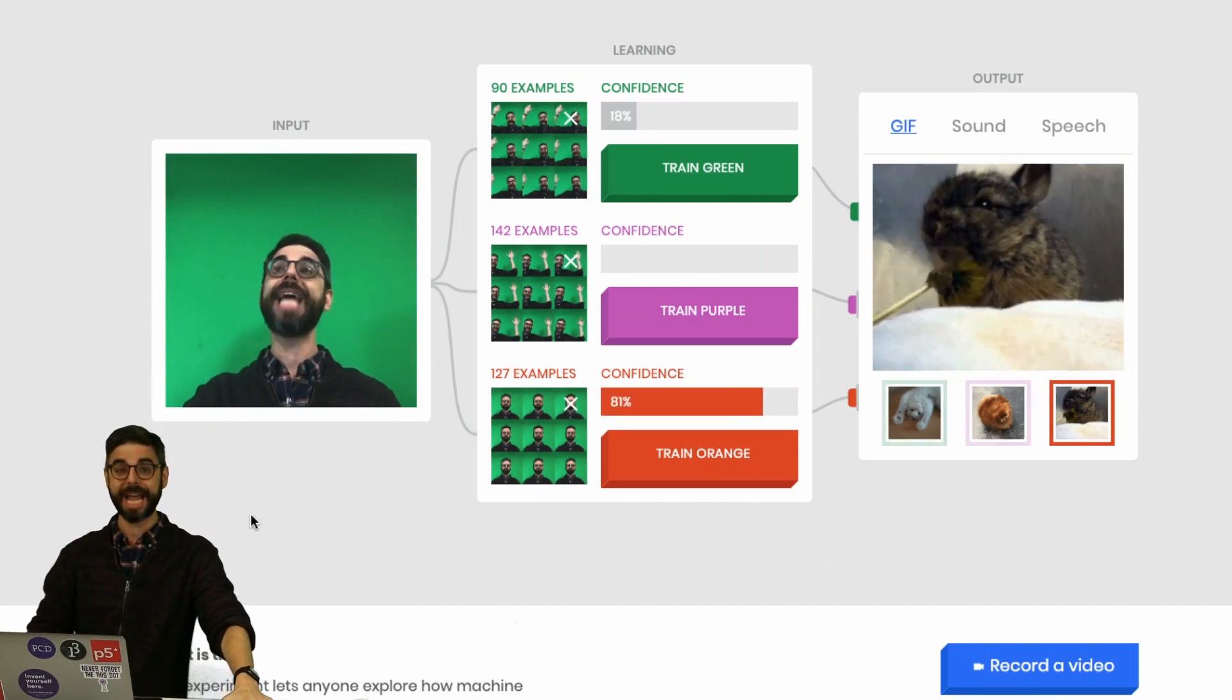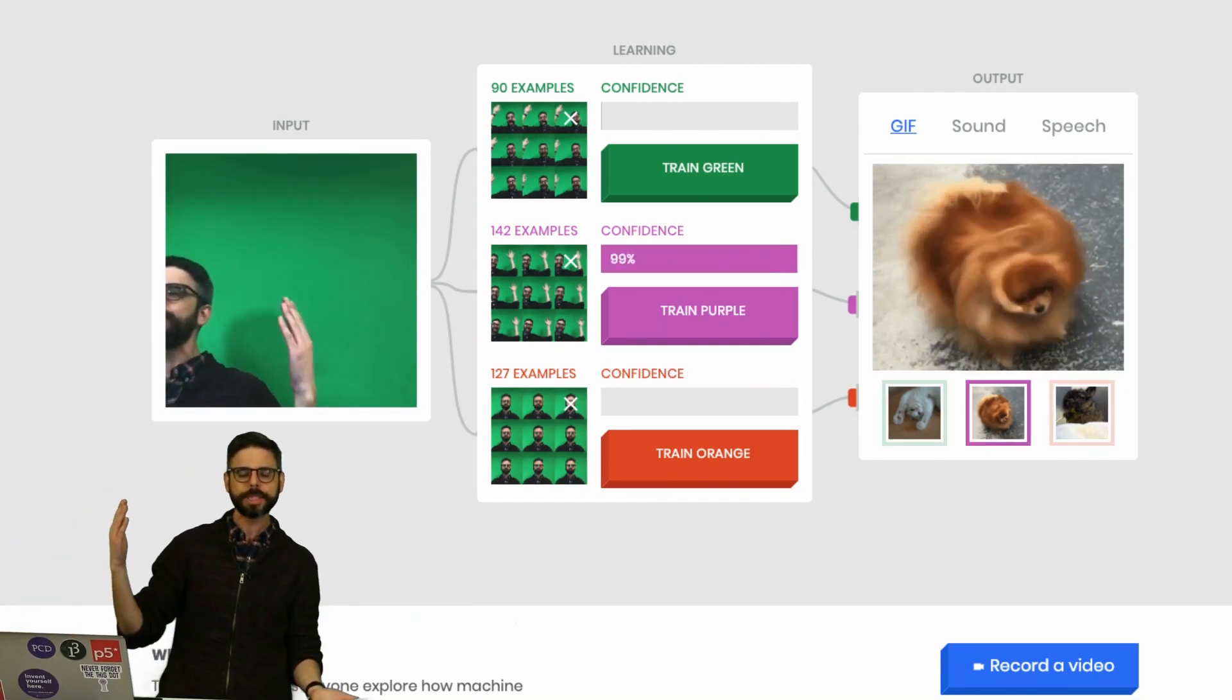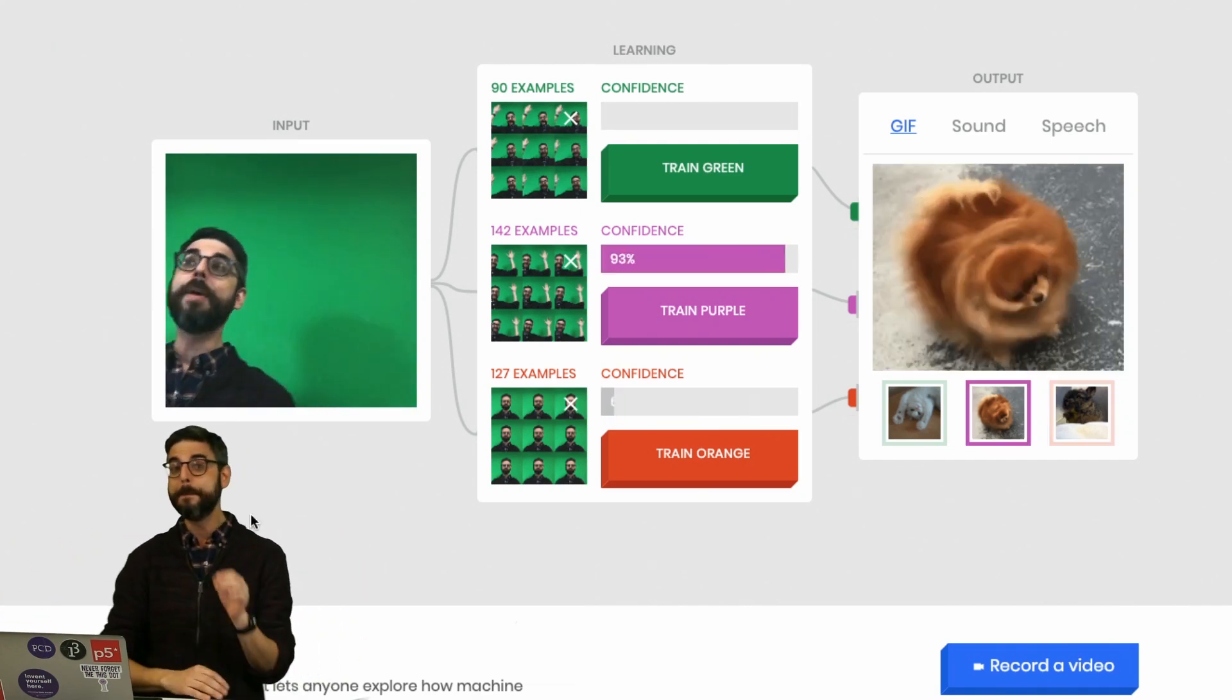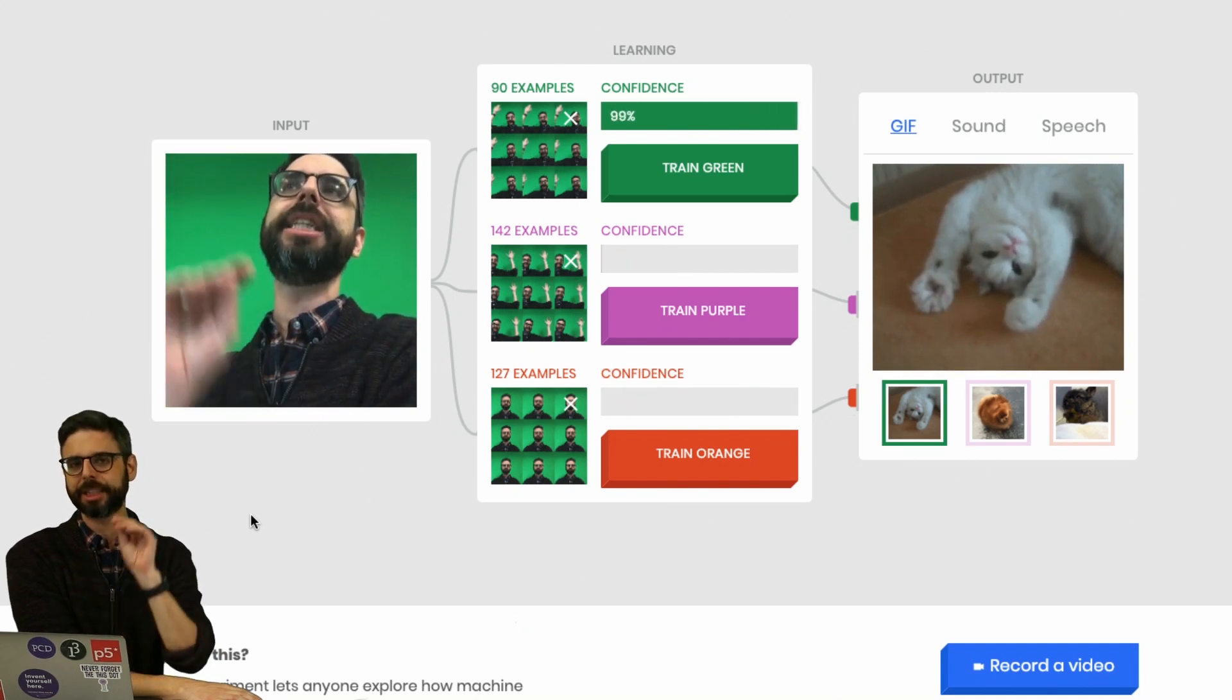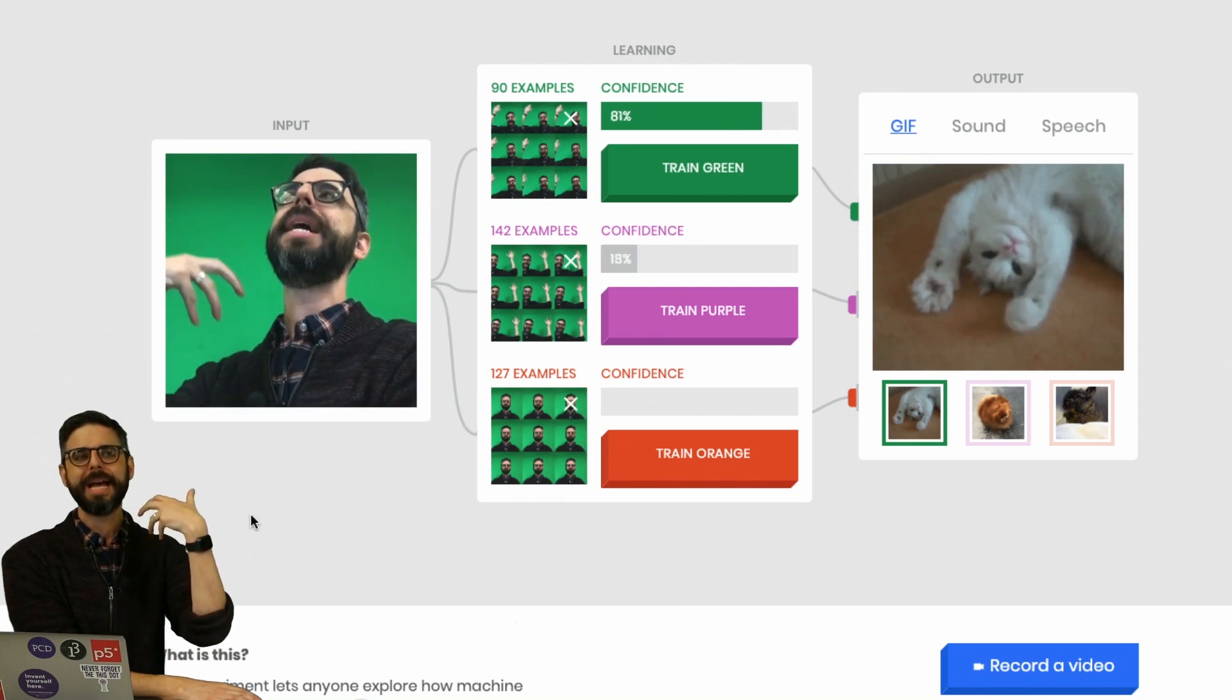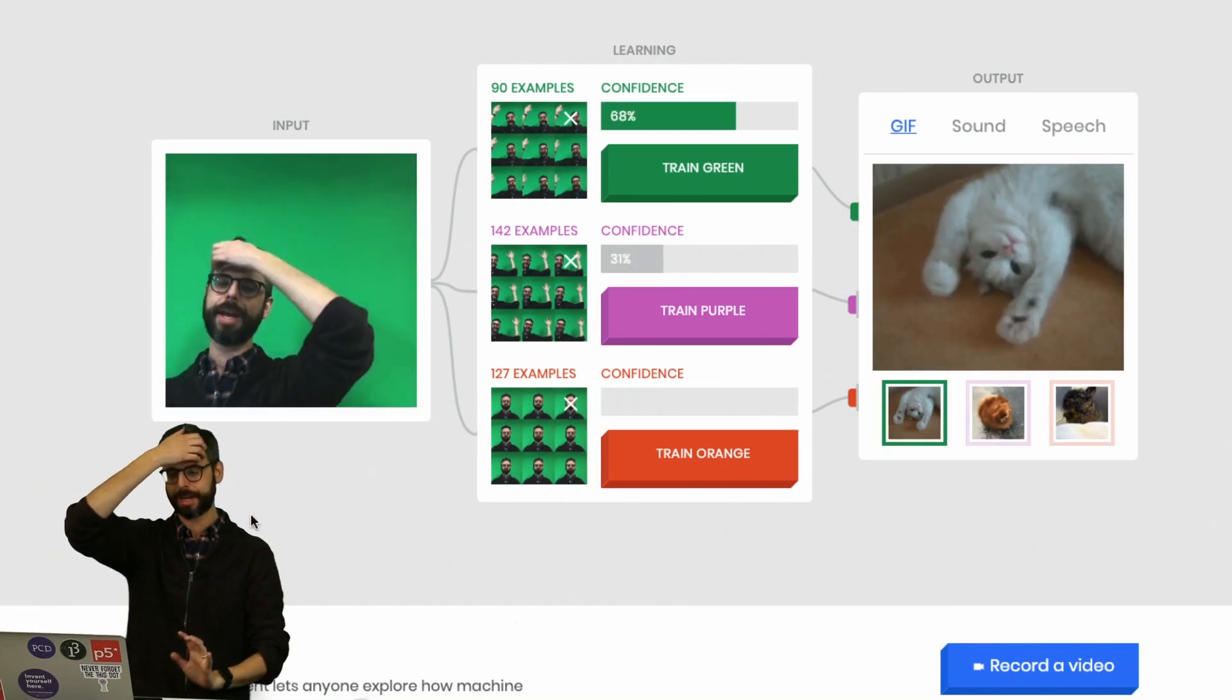That technique is called KNN classification, which has some advantages. There are pros and cons to both techniques. The main advantage of KNN classification is training the model is happening as you're adding new images, as opposed to a separate step.